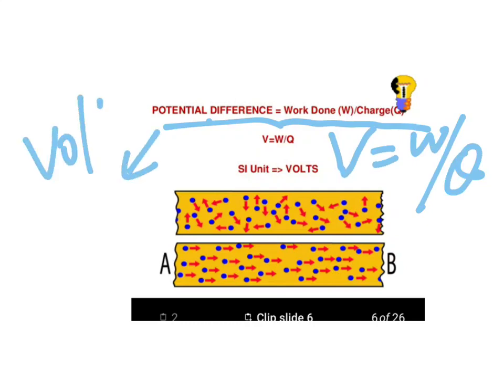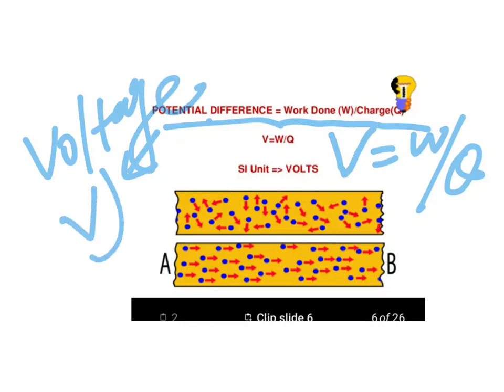Mathematically, potential difference is shown as V = W / Q, where V is the potential difference or voltage, W is the work done, and Q is the charge. The unit of potential difference or voltage is volt.